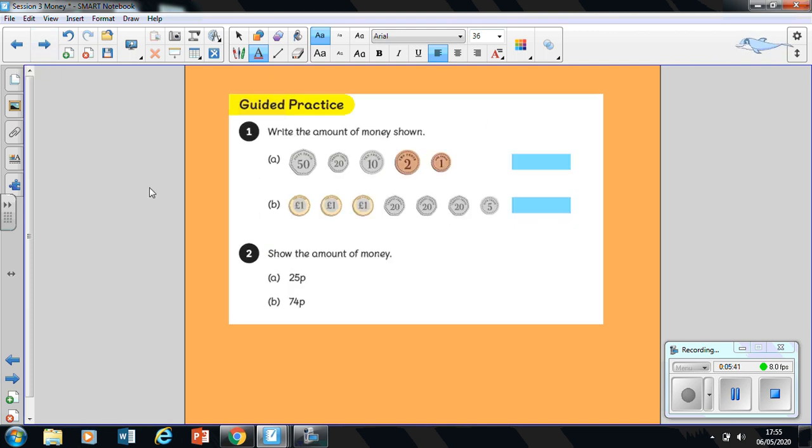Let's move on. I'd like you to have a go by pausing the video with your learning partner at home, remembering what I just said. Here you've got to write the amount of money that's shown. I've already reminded you that you add up your coins with the largest value at the beginning. Here it's already in order for you, so you just have to count on and tell your learning partner the answer. For question B, we're just putting our pounds together and then adding on our pence. For question two, have a practice showing them using the coins the amount of money: 25 pence and 74 pence.